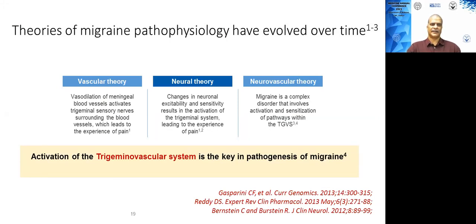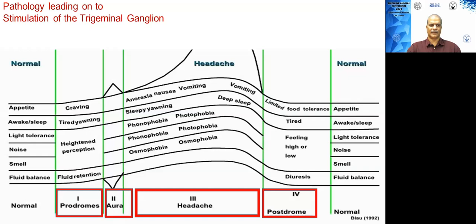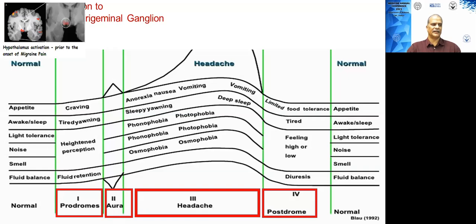Many theories have been proposed to explain migraine pathophysiology over the decades — first the vascular theory, then the neural theory, and now the neurovascular theory. However, activation of the trigeminovascular system is the key in pathogenesis. The main trigger starts from the hypothalamus — scans have shown that hypothalamic activation occurs even prior to the onset of migraine pain. This also explains why triggers like menstruation, emotions, hunger, and sleep deprivation can precipitate a migraine attack.